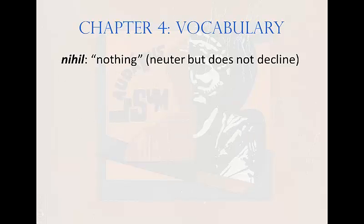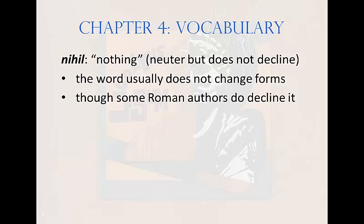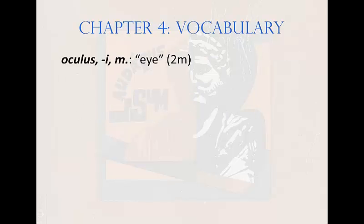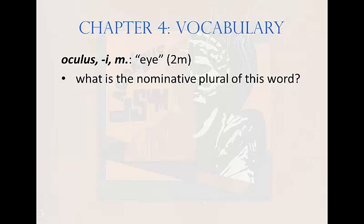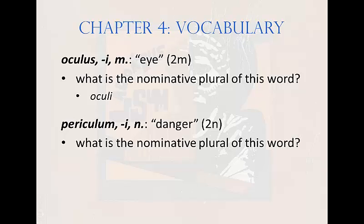The next word is nihil, meaning nothing. It is neuter, as we can tell from the adjectives occasionally attached to it, but it is unusual because it normally does not decline. However, some Roman authors do decline it: nihil, nihili, nihilo, nihilum, nihilo — but even those authors do not make a plural. Zero plus zero is never anything more than zero. Next: oculus, oculi, masculine, meaning eye — a second declension masculine noun; nominative plural oculi. Then: periculum, periculi, neuter, meaning danger — a second declension neuter noun; nominative plural pericula.